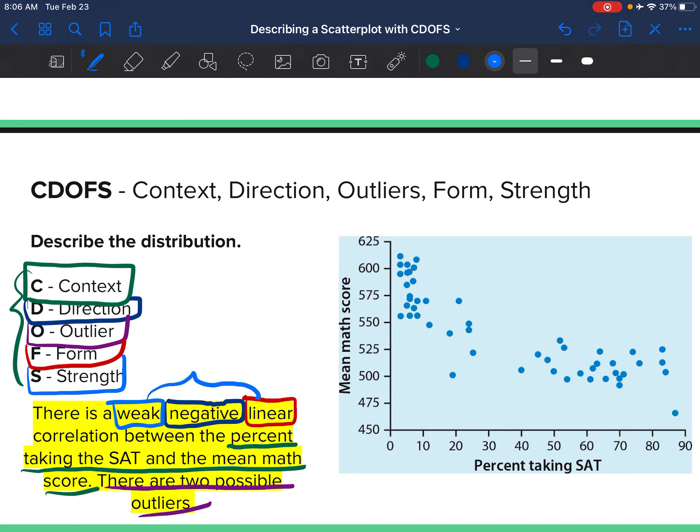Usually your strength, direction, and form you can put together one right after the other. I like to describe if there are outliers at the end, but as long as you have those five pieces, you are all set.